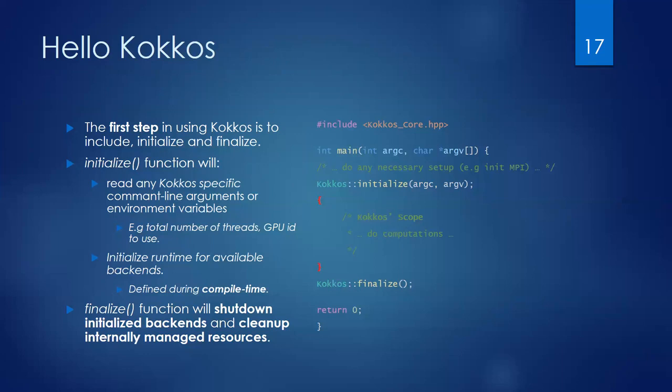The most basic example in COCOS is Hello COCOS. You include the library at the top, define your main, and then use the initialize and finalize COCOS calls, between which you do any COCOS-related computations. The initialize call prepares the COCOS runtime configuration and resolves it to whatever backends you've compiled for. It can also take command-line arguments specific to COCOS, like the number of threads or the GPU ID. The finalize call shuts down the framework and cleans up any internal managed resources.